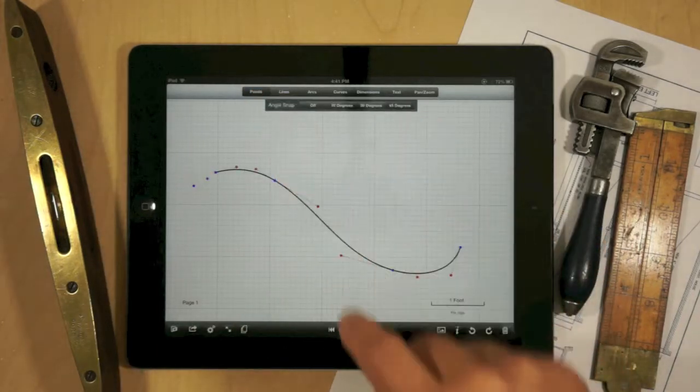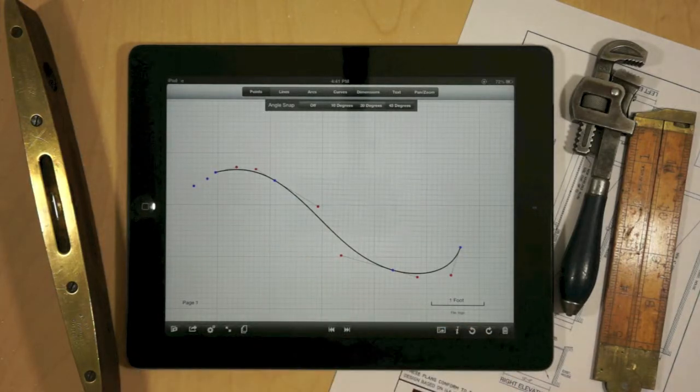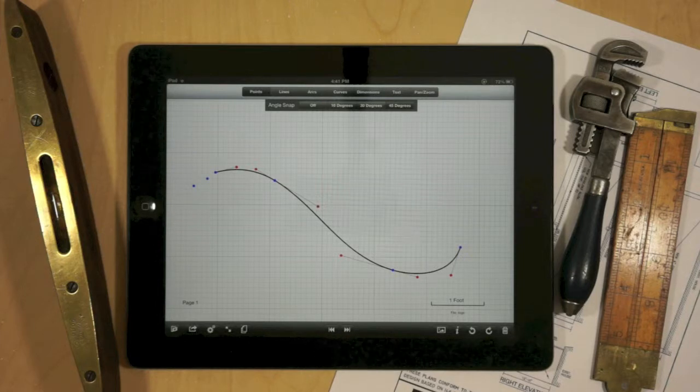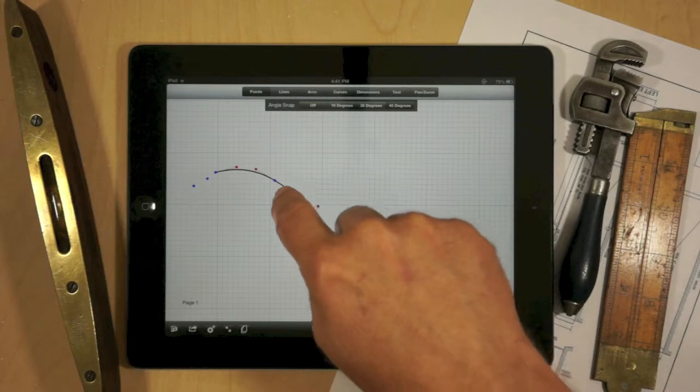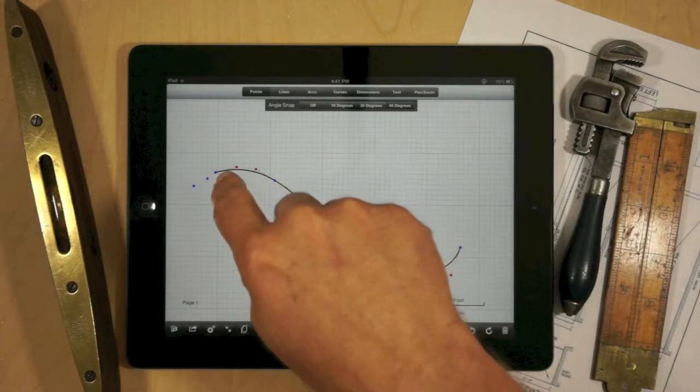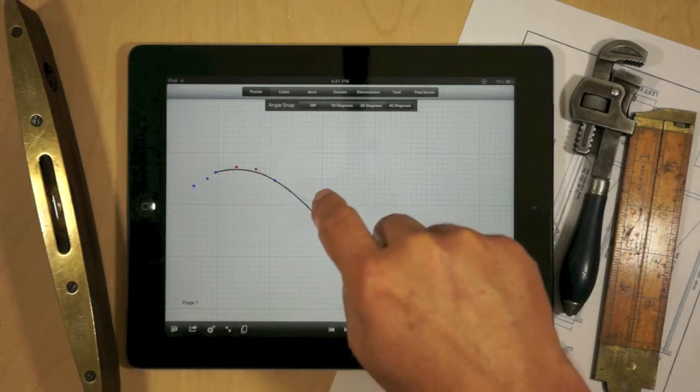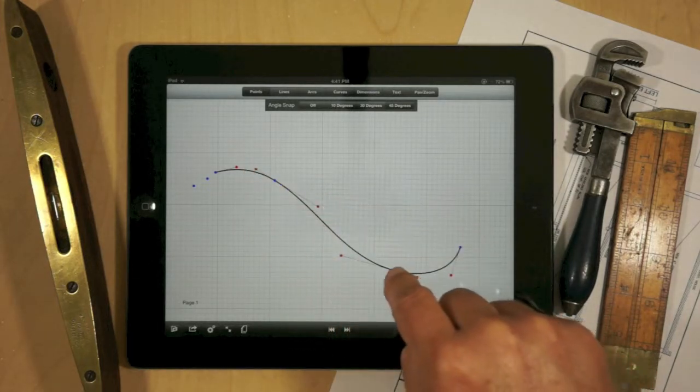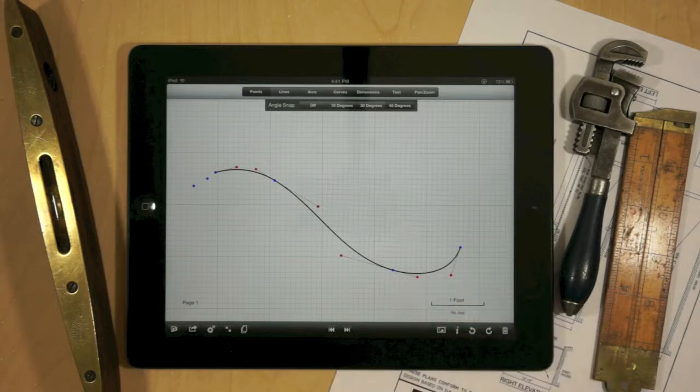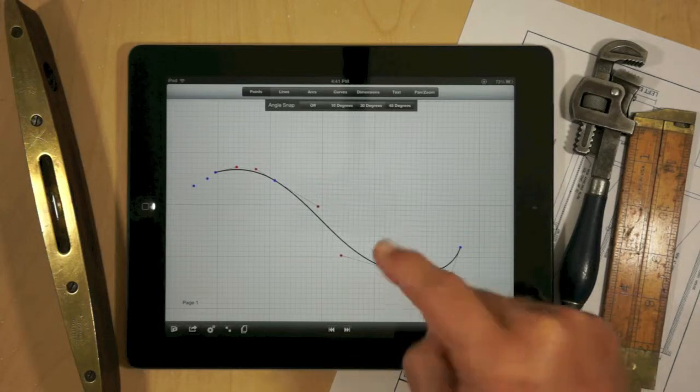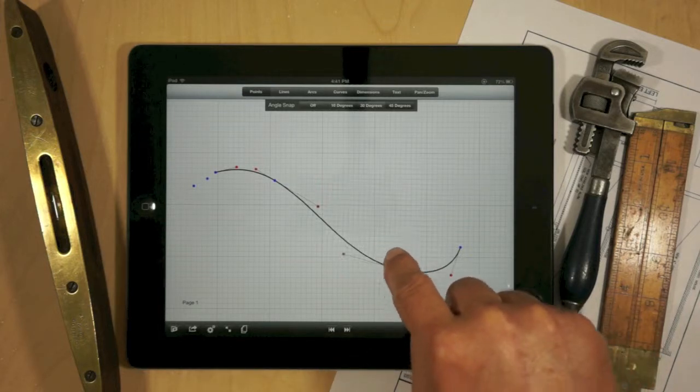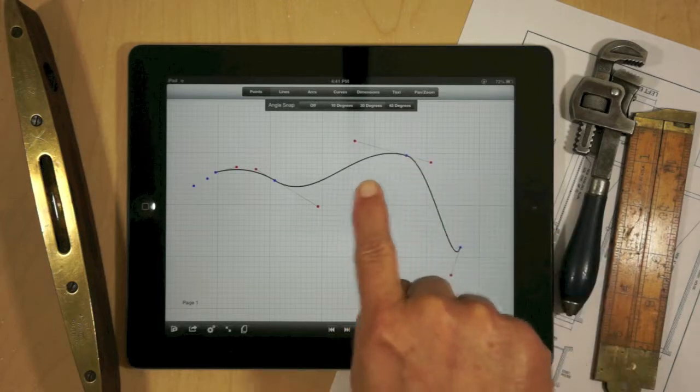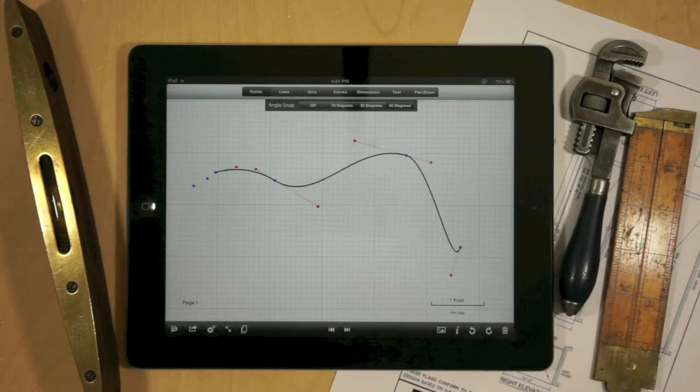To manipulate a Bezier curve, go into points mode. The way you manipulate the points will determine how the curve reacts. For example, if you grab the center point of a Bezier curve, and by the way, the Bezier curve is defined by two end points and associated control points. The end points are in blue, the control points are in red. If you grab a control point by touching it and dragging it, you'll notice that those control points move in tandem along with that Bezier curve.